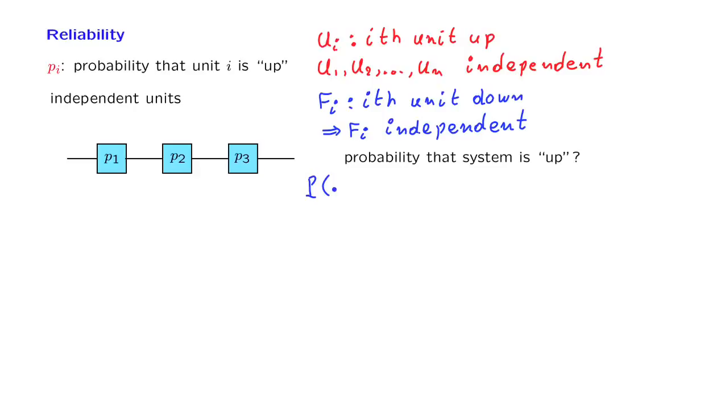The probability that the system is up, this is the event that the first unit is up, and the second unit is up, and the third unit is up. And now we use independence to argue that this is equal to the probability that the first unit is up times the probability that the second unit is up, times the probability that the third unit is up, and in the notation that we have introduced, this is just P1 times P2 times P3.